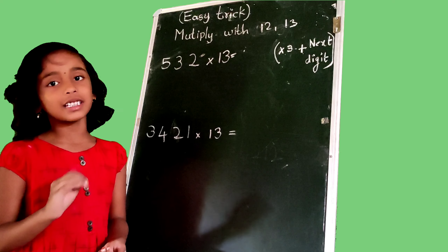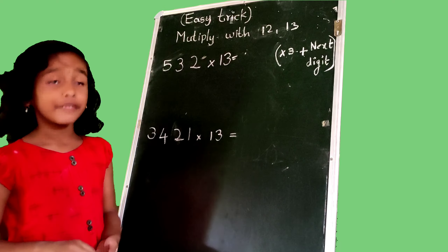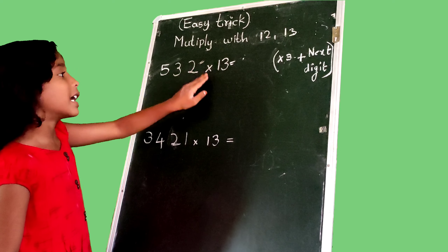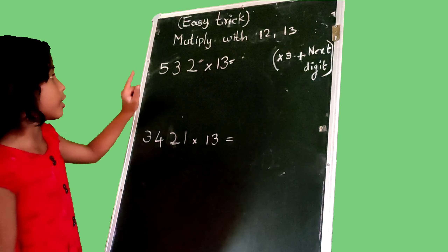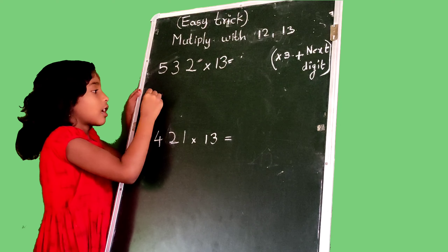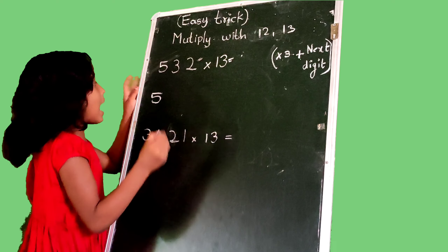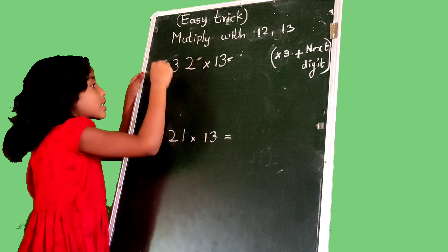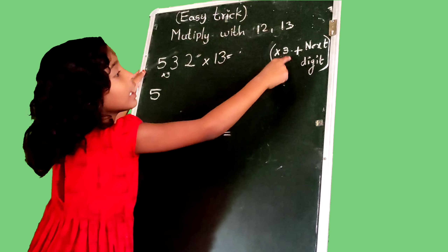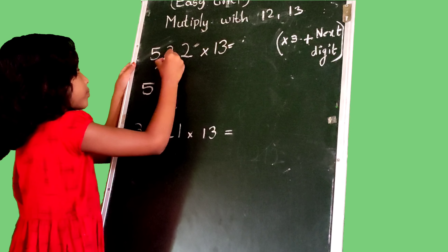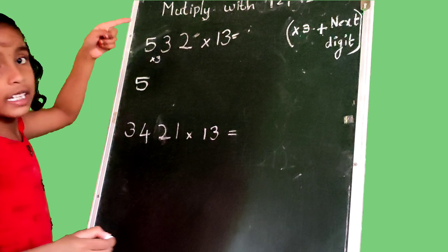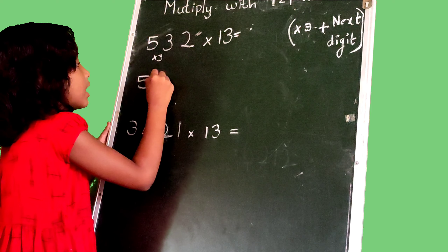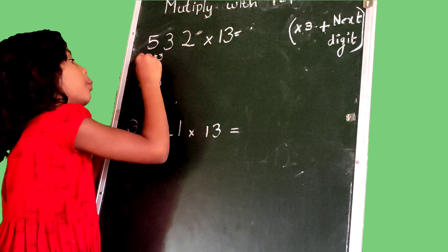Now multiply with 13. The formula is multiply with 3 and add the next number. Then 532 multiply with 13. We drop 5 as this and we multiply with 3: 5 times 3 is 15. Add next number: 15 plus 3 is 18. We write 8 and carry 1.